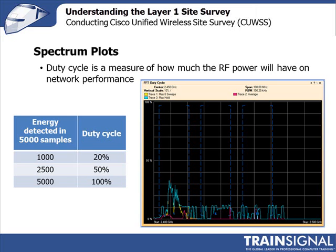The duty cycle calculation is straightforward: with 5,000 samples in a 30 millisecond time frame, if 1,000 of those detected energy, the duty cycle is 20 percent, and so on. This gives a measure of how much the spectrum is being utilized — in this case, the spectrum is not very heavily utilized at all.